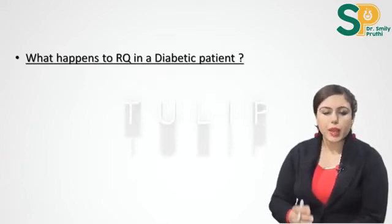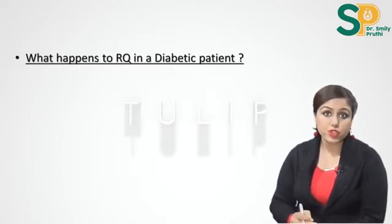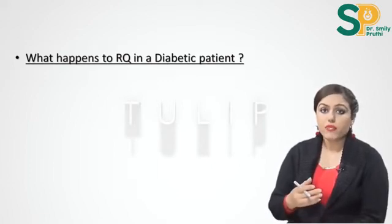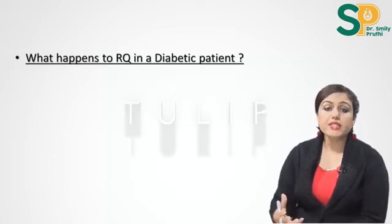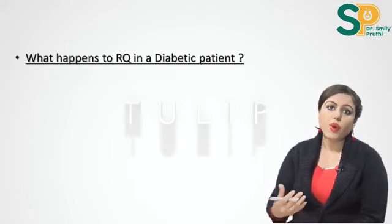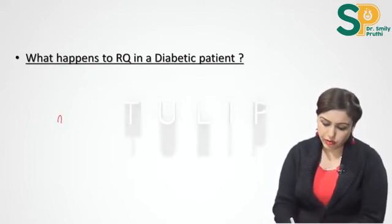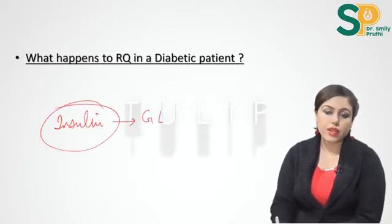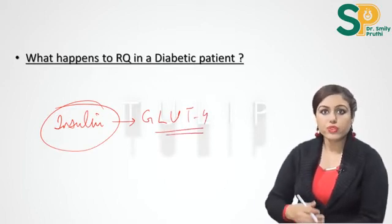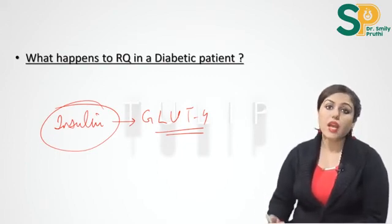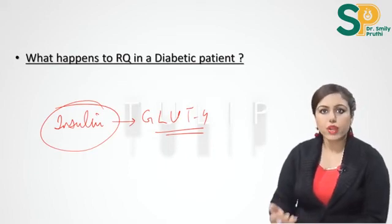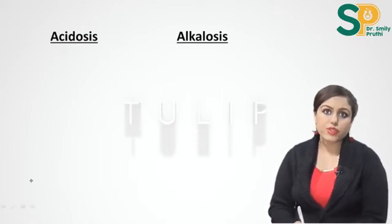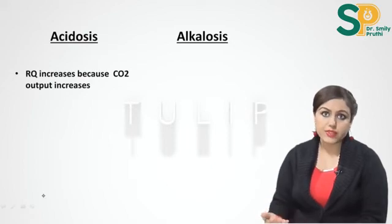In a diabetic patient, the situation is similar to fasting or starvation. There is relative or absolute deficiency of insulin, so GLUT4 on peripheral cells is not activated, glucose from blood cannot enter peripheral cells, and cells start using fats — so RQ decreases. On giving insulin, GLUT4 on peripheral cells is activated, glucose can enter the cells, and cells again use carbohydrates as the main fuel, so RQ increases again. In summary: in a diabetic patient RQ decreases, but on giving insulin it increases.